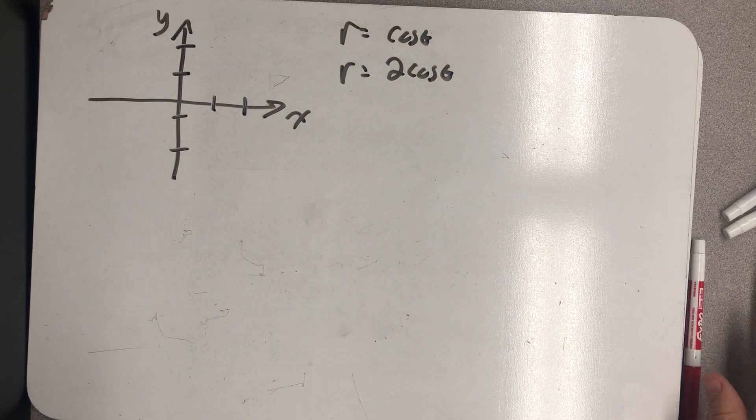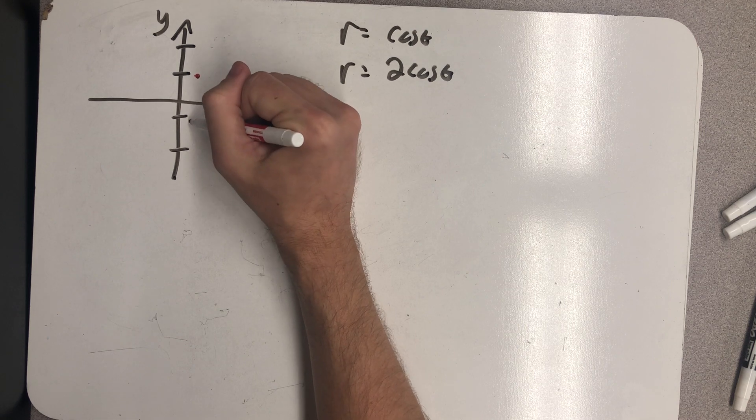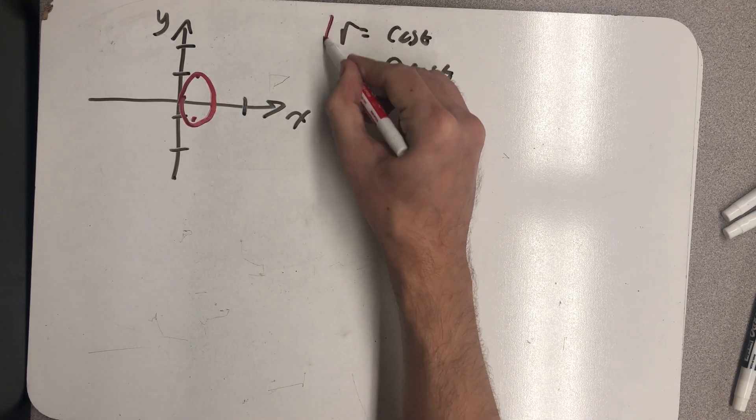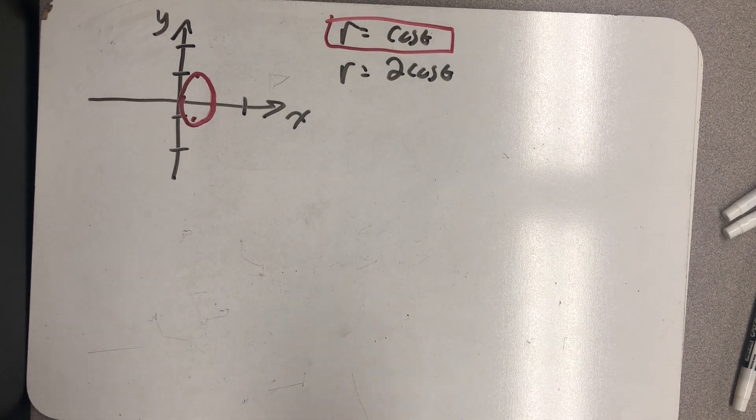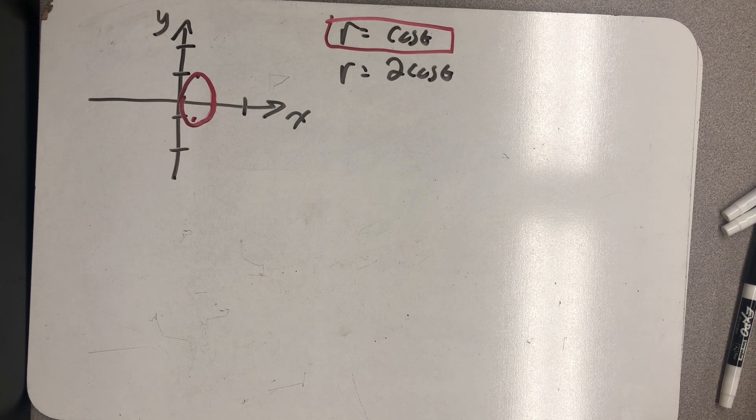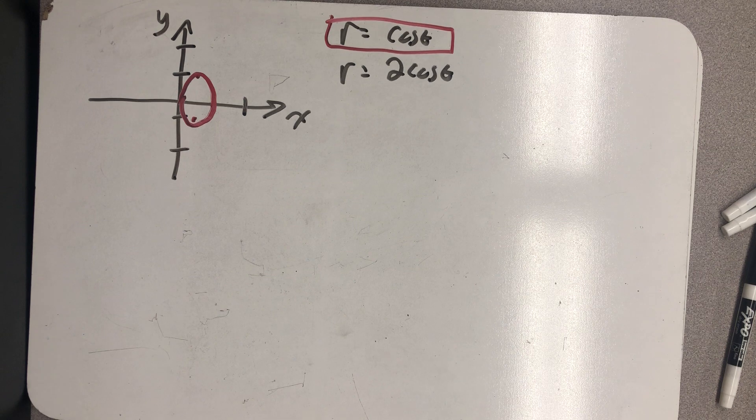They happen to be two circles whose centers lie on the x-axis. There's this one, r equals cosine theta, and then we have r equals 2 cosine theta, which just lies a little further out.